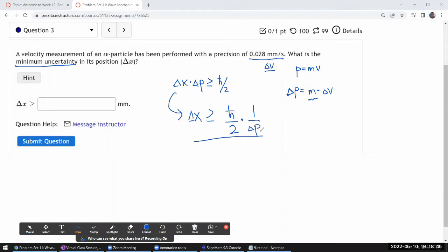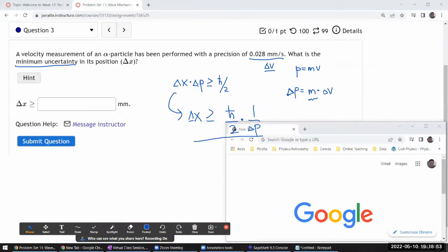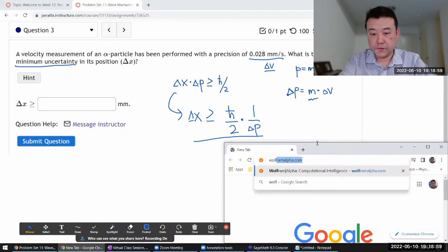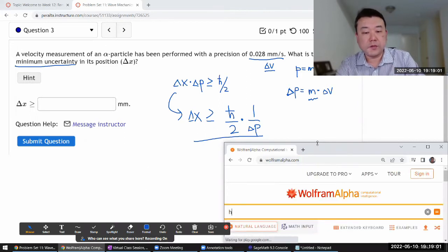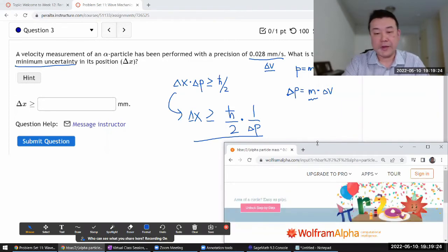Okay, I feel like there's a lot of constants here. Let me just use WolframAlpha. It's going to be a little bit quicker that way than doing the calculation in SageMath. So it'll be h bar divided by two divided by, still wonder if it has alpha particle mass. If it doesn't, I have another way to deal with it. Uncertainty in velocity is 0.028 millimeter per second.